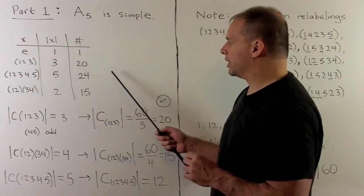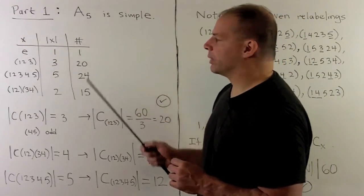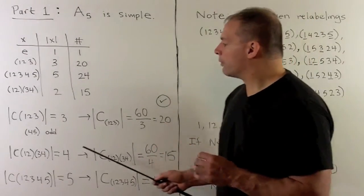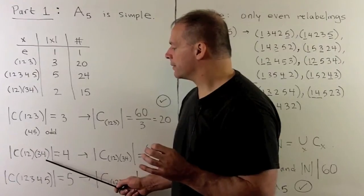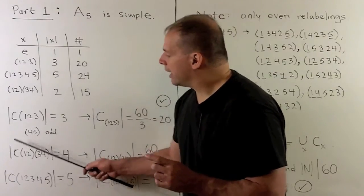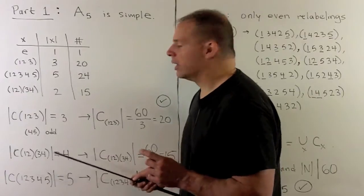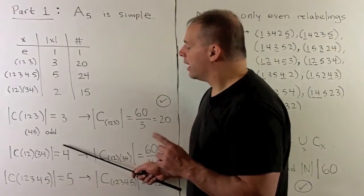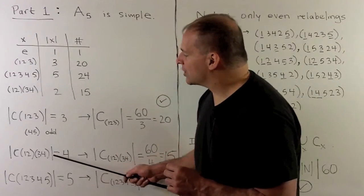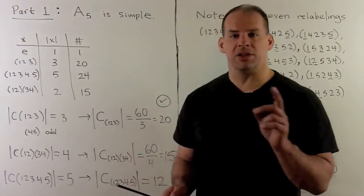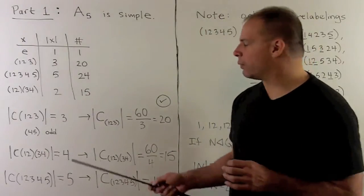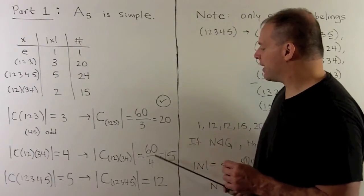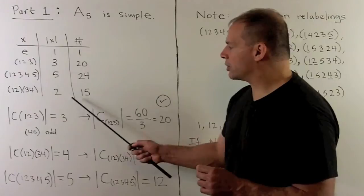For the product of disjoint two-cycles, in S4 this will belong to a Z2 × Z2, which is abelian. So we expect to get at least four elements in the centralizer. If we try to add something with a label 5, we won't be in the centralizer. So we get 4, meaning the order of this class is 60 divided by 4, which is 15, and that covers everything.